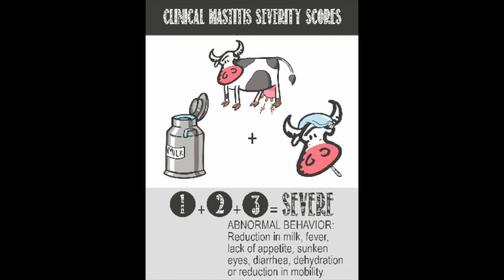The final level of severity is a severity score three case. These are serious illnesses where the symptoms of the mastitis have gone beyond the udder of the cow and are affecting their general attitude and behavior — they're exhibiting signs of sickness behavior. So these are cows that have a fever, they may be off feed, they may be depressed, slow, recumbent, or very ill. Those symptoms of severity score three indicate that this is a medical emergency and these cows require immediate therapy.